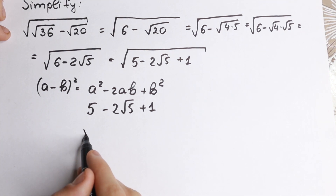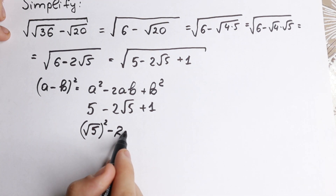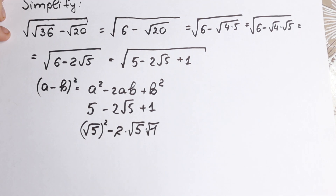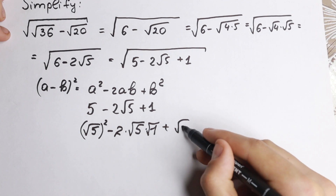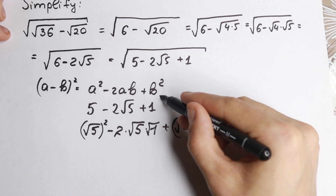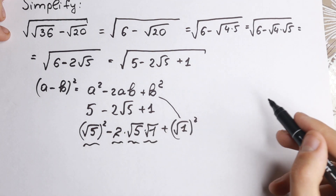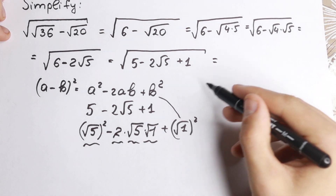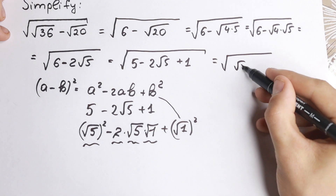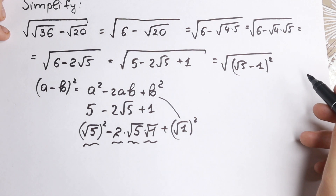If we write 5 as (square root of 5) squared, then we have minus 2 times square root of 5 times 1, and this 1 as (square root of 1) squared. We can easily see this matches our identity — it is (square root of 5 minus square root of 1) squared, which equals (square root of 5 minus 1) squared.